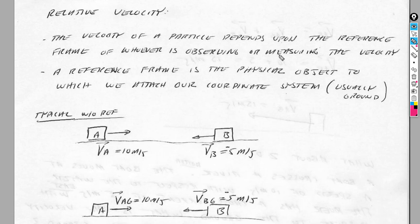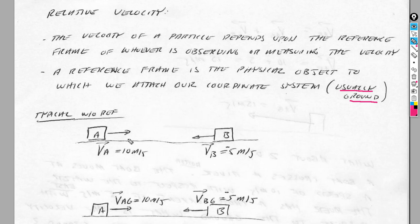Pilots know this very well, because you have your relative speed to the ground, which might be very different than the relative speed to the wind. If you're flying into the jet stream or with the jet stream, the speed of the plane is going to drastically change because you have to add those velocities up. A frame of reference is the physical object to which we attach our coordinate system — usually the ground. We have to say we're moving at a certain speed in reference to something else; otherwise, we don't really know that we're moving.